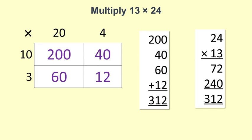Comparing with the area model, see how the 72 corresponds to the 60 plus 12, and the 240 corresponds to the 200 plus 40.